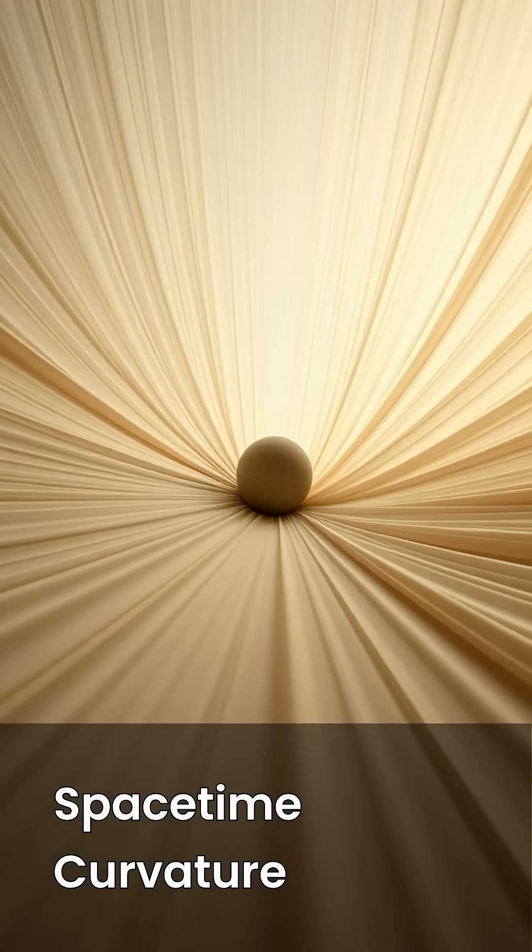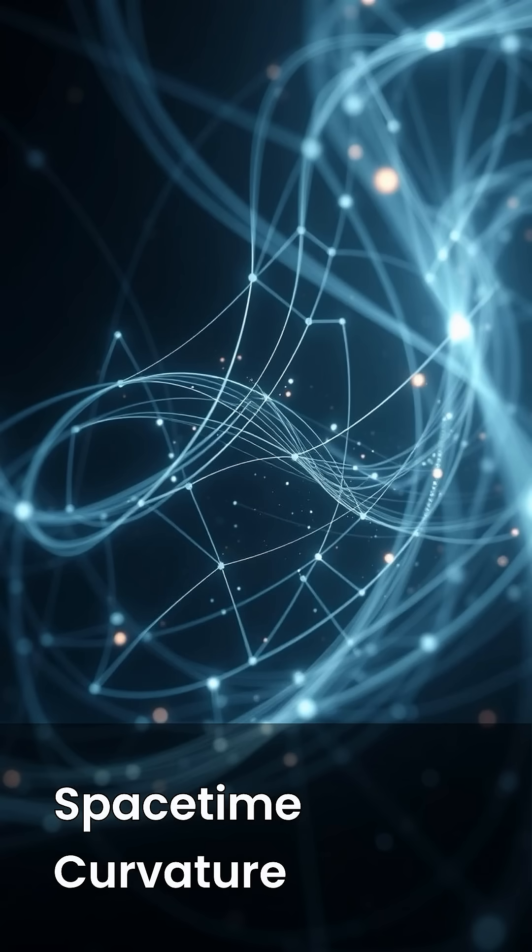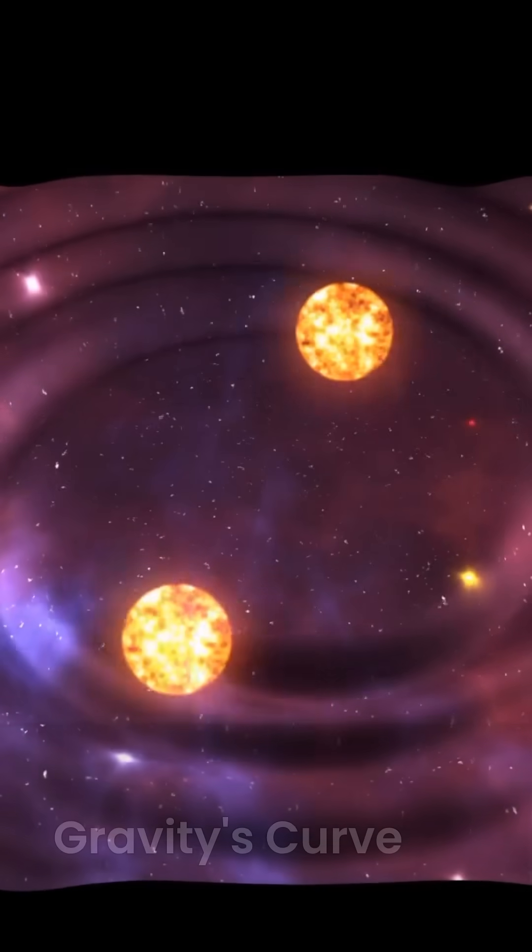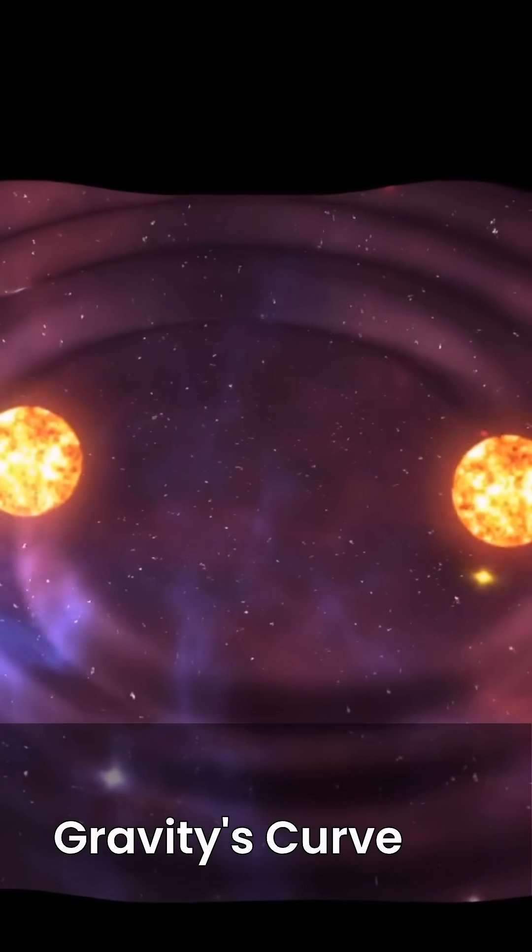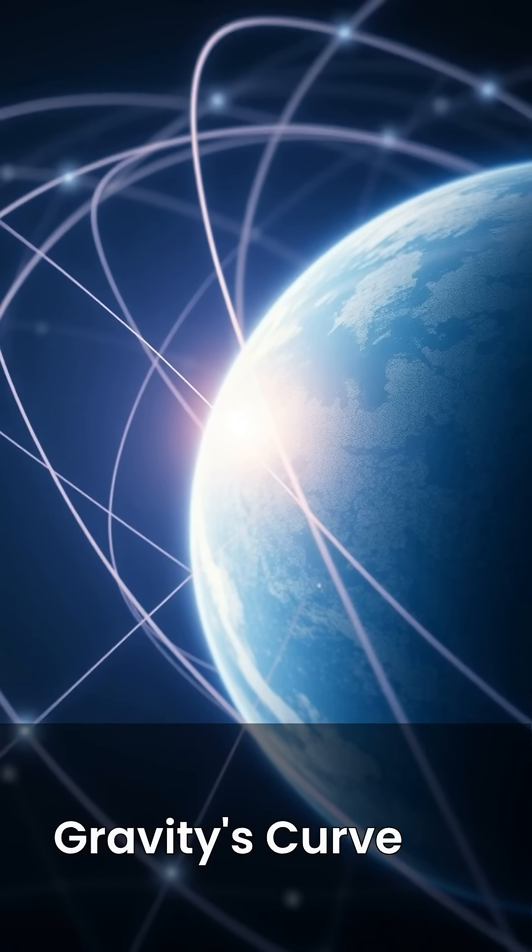Imagine our universe as a giant, flexible fabric, what physicists call space-time. Massive objects like planets and stars are like heavy bowling balls placed on this fabric. They create dents, or curves, in space-time.